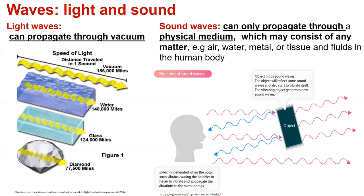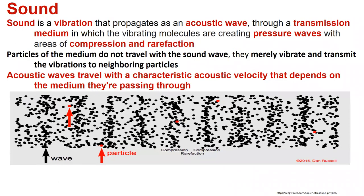Light waves can propagate through vacuum, but sound waves can only propagate through a physical medium, which may consist of any matter like air, water, metal, tissue, or fluids in the human body.